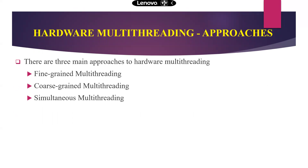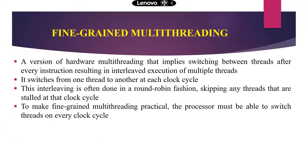There are three main approaches to obtain hardware multi-threading: one is called fine-grained multi-threading, another is coarse-grained multi-threading, and the third one is simultaneous multi-threading. Fine-grained multi-threading is the version of hardware multi-threading that implies switching between threads after every instruction, resulting in interleaved execution of multiple threads.